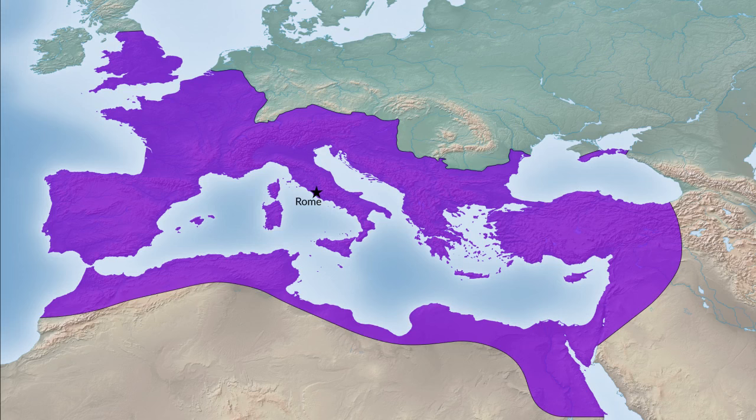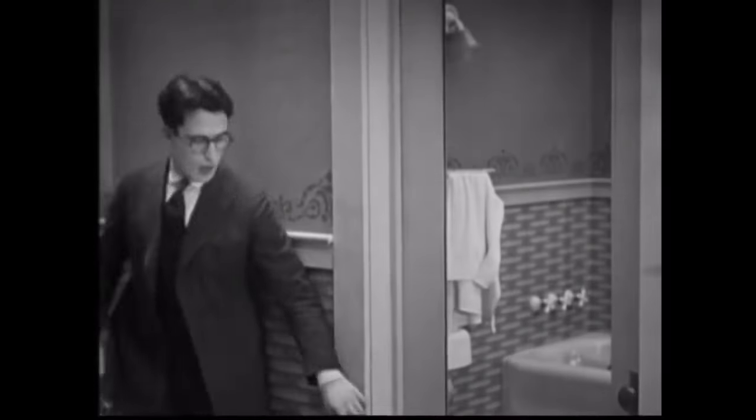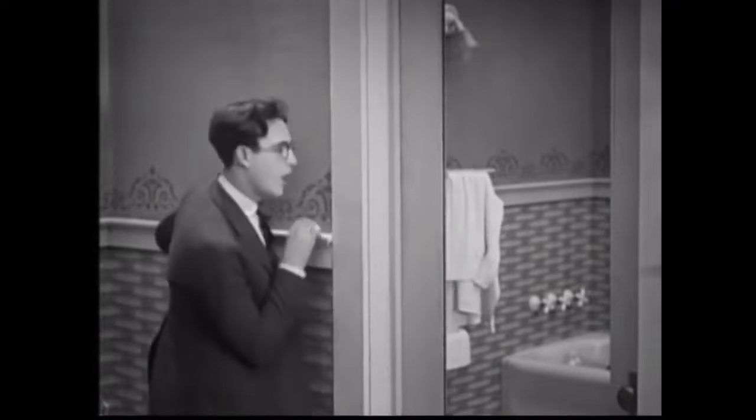The Roman Empire was a Mediterranean-based empire that happened to include England up at the edge of it, and it included Western Europe as well as Southeastern Europe and parts of the Middle East and North Africa. Now at various times in the latter part of the period of the Roman Mediterranean Empire, the empire got split up in various ways for various reasons.